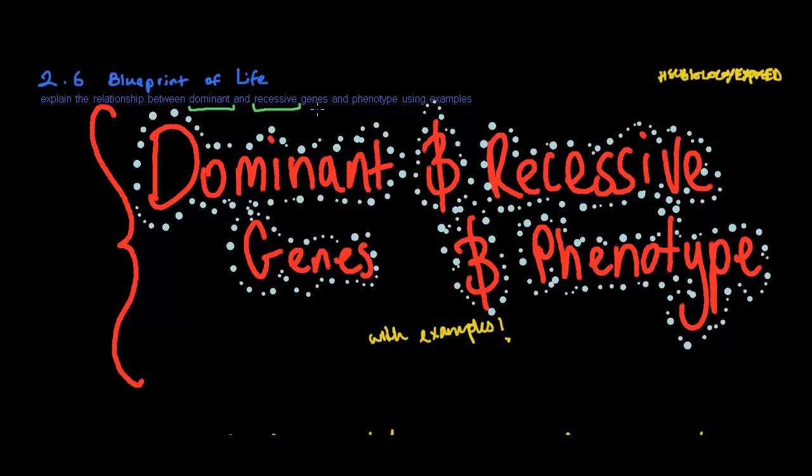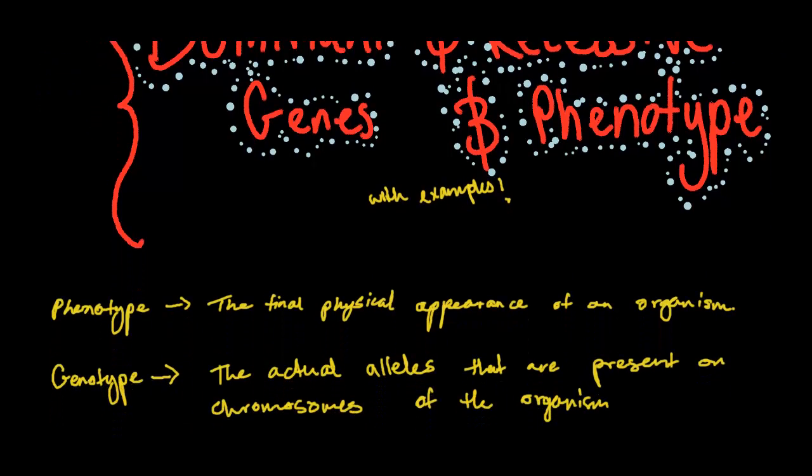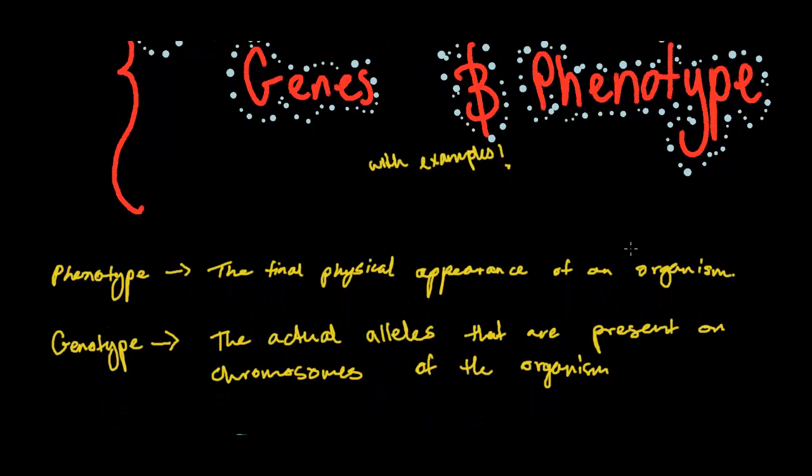Just to recap your memory, the genotype is defined as the letters, so it's the alleles on the gene. And the phenotype is defined as the physical expressed characteristics, so what can be seen is what the phenotype means. What we're going to be doing now is we're just going to be going through some examples, and those two simple definitions. The physical appearance of the organism is the phenotype, and you've got genotype, the actual alleles that are present on the chromosomes of the organism.